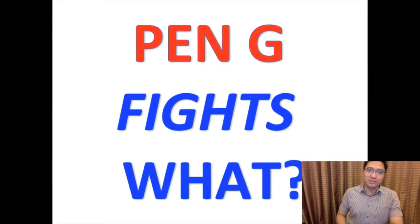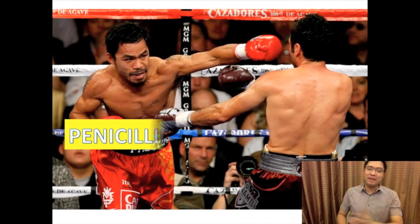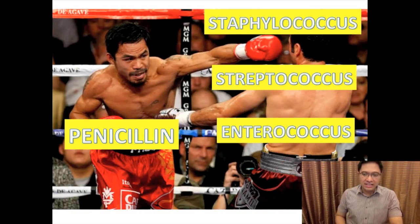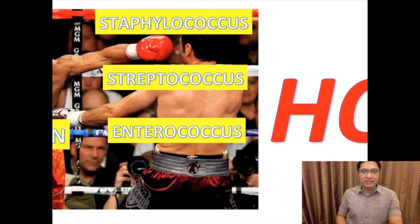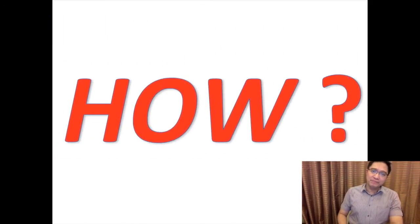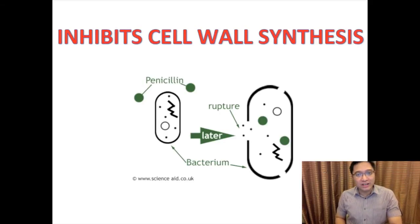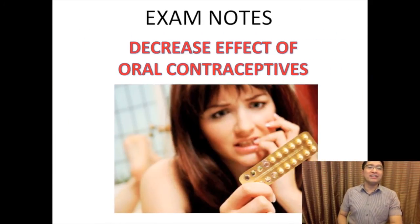Those are the important things about ORAL. Penicillin G fights staphylococcus, streptococcus, and enterococcus. It does this by inhibiting cell wall synthesis, which is why it is effective against many illnesses such as meningitis, pneumonia, pharyngitis, and syphilis.